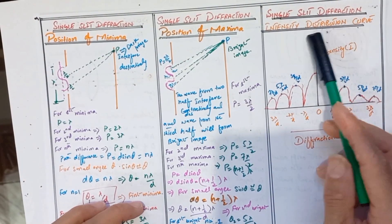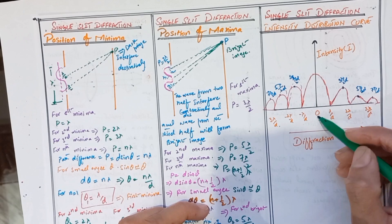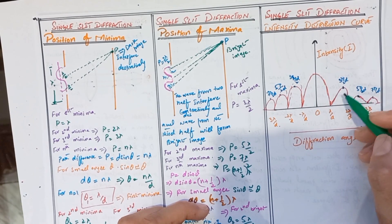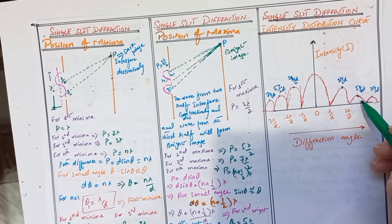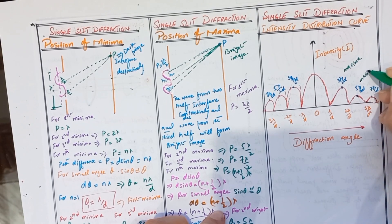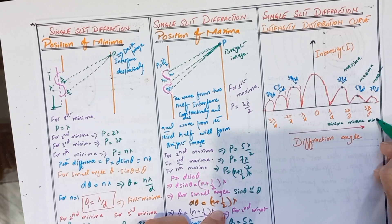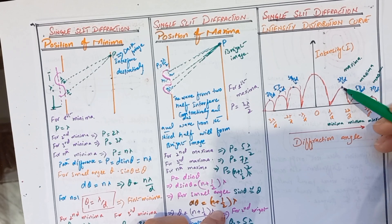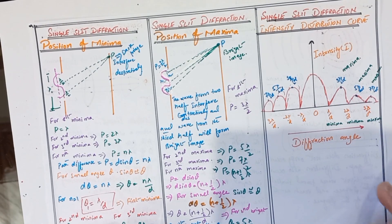Now we discuss the intensity distribution curve for single-slit diffraction. On the x-axis we take the diffraction angle; on the y-axis we show the intensity of the diffracted rays. At the centre the intensity is maximum (central maxima). Minima occur at angles lambda over d, 2 lambda over d, 3 lambda over d, and so on. Secondary maxima occur at 3 lambda over 2d, 5 lambda over 2d, and 7 lambda over 2d, with decreasing intensity. This describes the intensity distribution of the diffracted fringes on the screen.